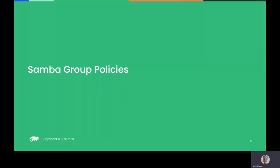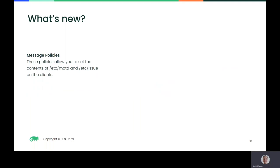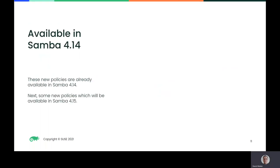So what group policies does Samba have to offer? SMB.conf policies allow you to distribute SMB.conf parameters to Linux clients from a GPO, processed for clients nested in or below the OU with which the GPO is linked. Script policies allow you to execute scripts on clients, creating hourly, daily, weekly, and monthly cron jobs. The script must already be present on the machine or accessible via a network share. Sudoers policies distribute sudoers entries to clients, added to /etc/sudoers.d. Message policies set the contents of /etc/motd and /etc/issue on clients. These policies are already available in Samba 4.14.